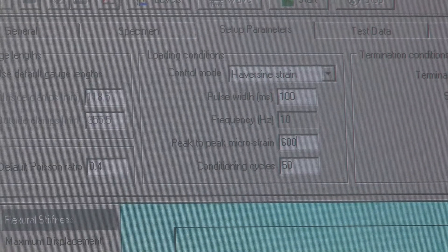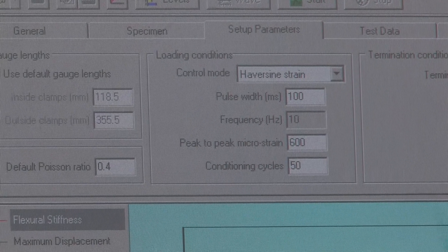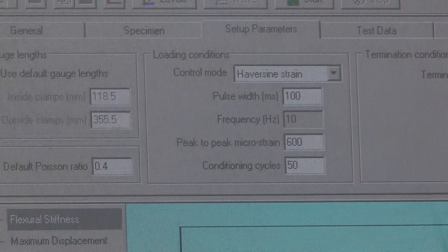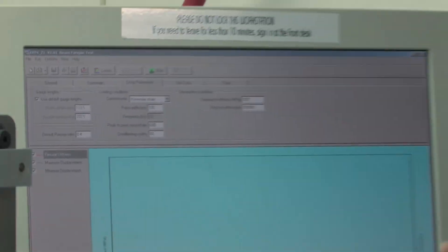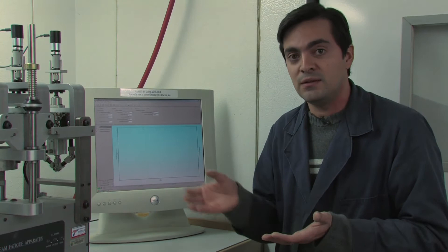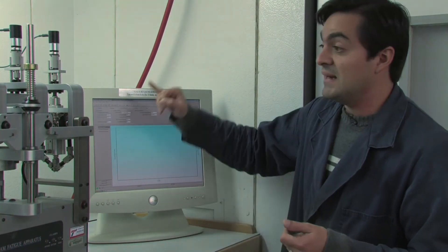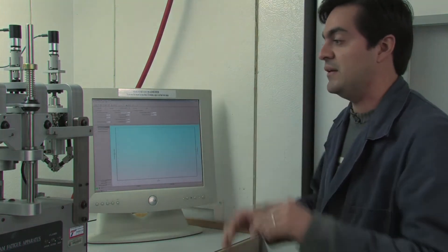What it does is it's going to start applying these deformations, and at the 50th cycle it's going to measure the stiffness. Since it's a strain control test, the beam is not going to break, so we need to define a failure in some way. Basically the specification defines failure as when you reach 50 percent of the initial stiffness of the specimen. That initial stiffness is measured on the 50th cycle so that the noise goes a little bit down on the first measurements.